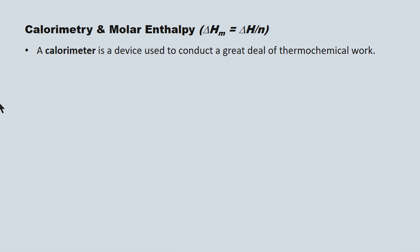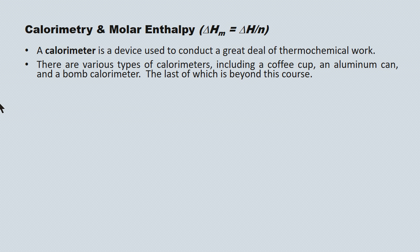A calorimeter is a simple device used to conduct a great deal of thermochemical work. There are various types of calorimeters including a coffee cup, an aluminum can, or a bomb calorimeter. The last of these is beyond this course.